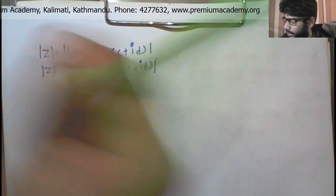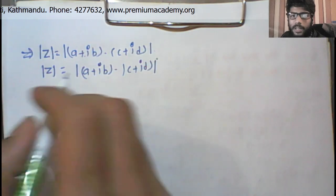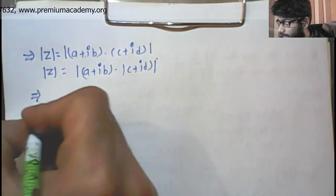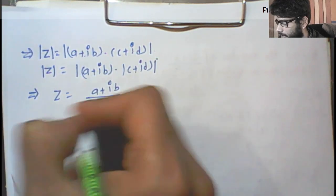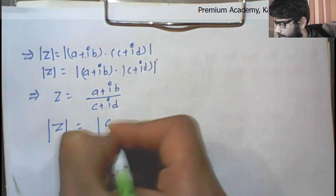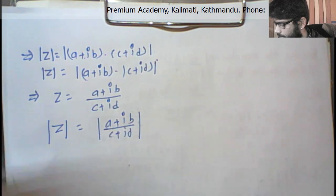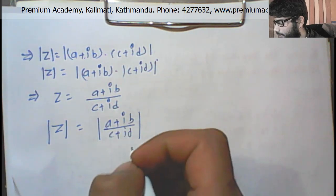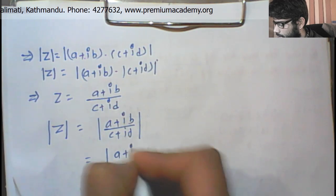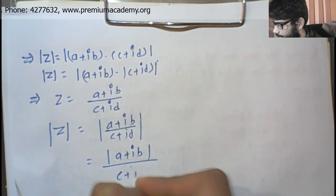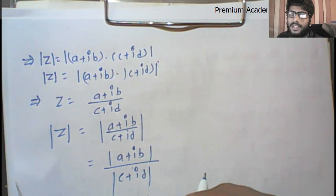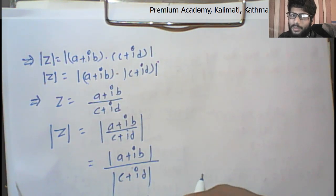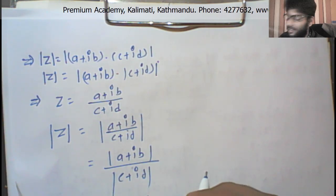This is the product case. Now there is also a division case. Z equals A plus iB form. For the division case, you take the modulus of the numerator and denominator separately and then reduce. This is how you handle modulus in division of complex numbers.